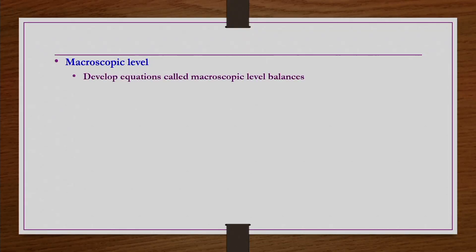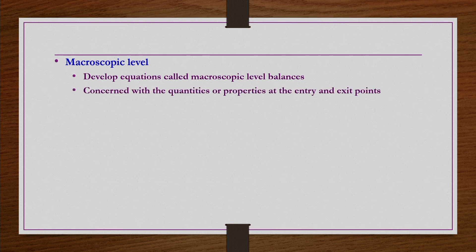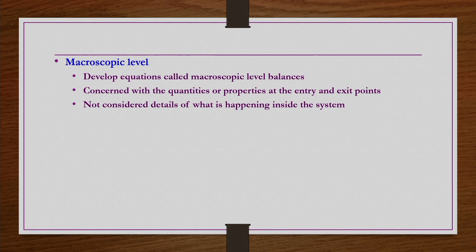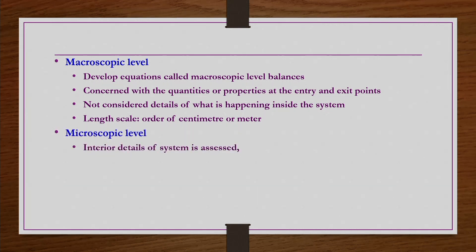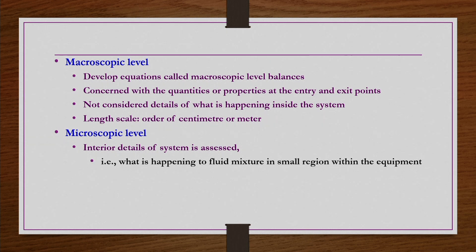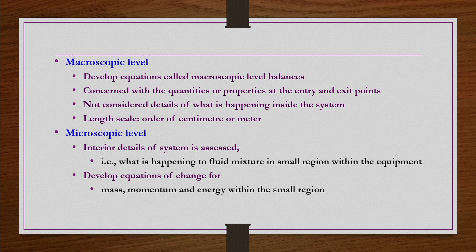At the macroscopic level, we develop macroscopic balance equations, concerned only with quantities at entry and exit points, with length scale of order centimeter to meter. At the microscopic level, we take interior details of the system — how properties change from one location to another — and develop equations of change for mass, momentum, and energy within small regions. Length scale here is order of microns to centimeters.